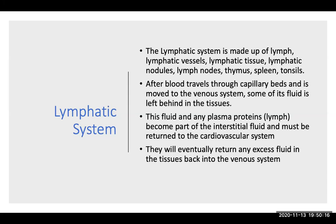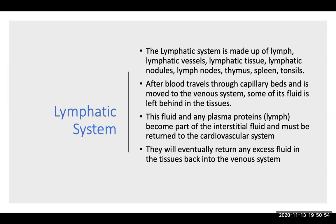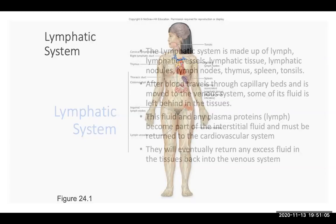The best way to describe your lymphatic system is it's kind of like your body's catch-all system. Any excess fluid that isn't in the blood but is in the interstitial space will be picked up by your lymphatic system, filtered, and then taken eventually back to the superior vena cava. After blood travels through all the capillary beds and is moved to the venous system, some of its fluid will always be left behind in the tissues and must be returned to the cardiovascular system.